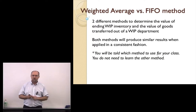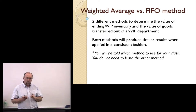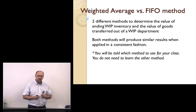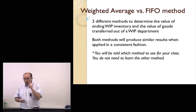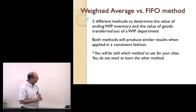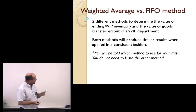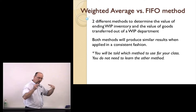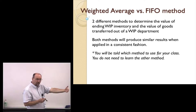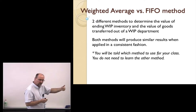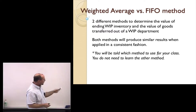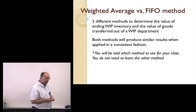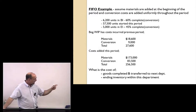There are two different methods we can use: the weighted average method or the FIFO method. You will know which method you need to use for your class — that will be communicated to you. You only need to know one method. Both methods are used to determine ending work in process inventory and the value of goods being transferred out of our department, either into the next work in process department or, if we're the last WIP department, the cost transferred to finished goods. Both methods produce similar results when applied consistently — not exact, but pretty close.